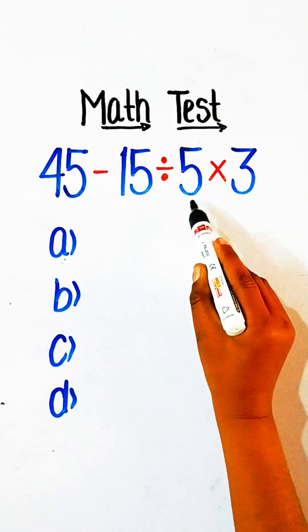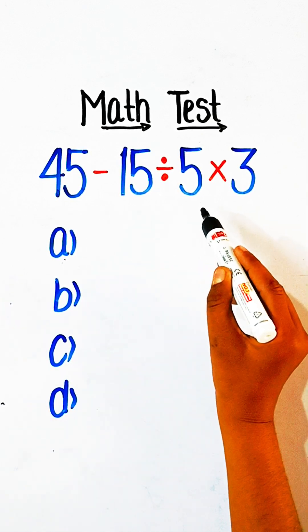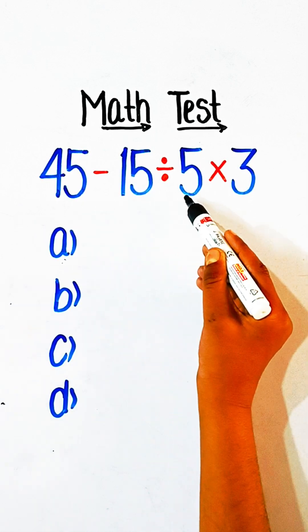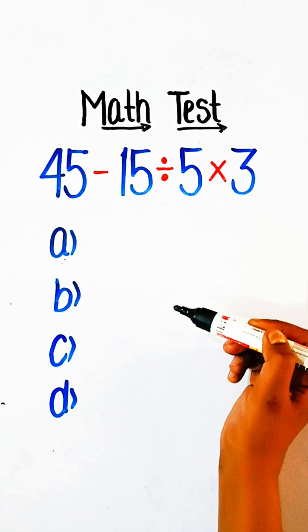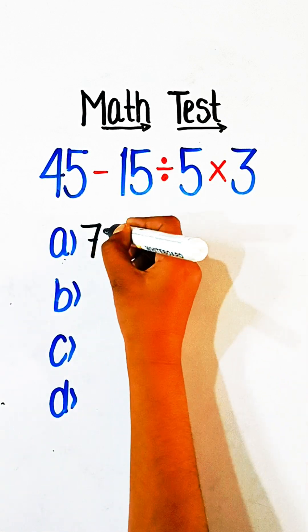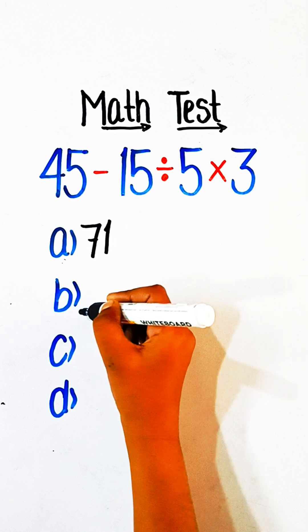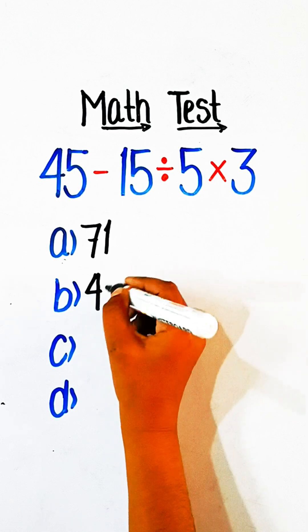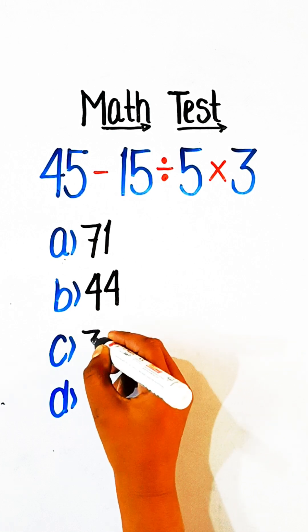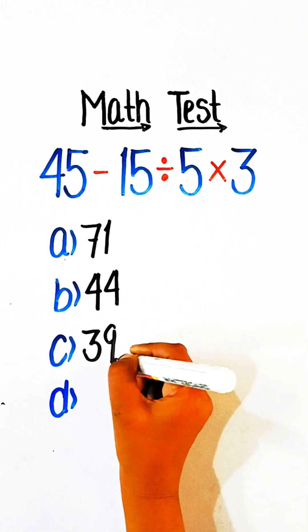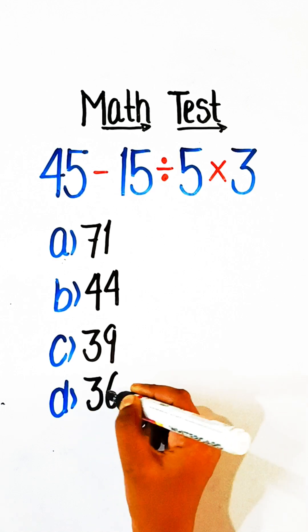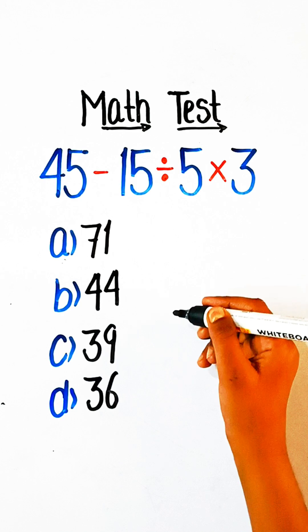In this video we will solve this basic math equation: 45 minus 15 divided by 5 multiply by 3 equals to what? Option A: 71, Option B: 44, Option C: 39, Option D: 36. Comment your answer.